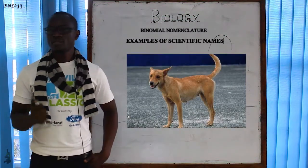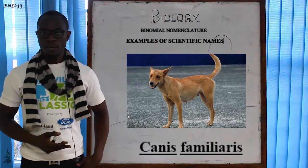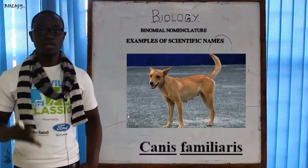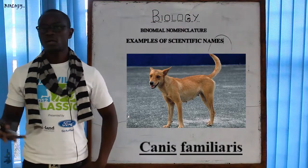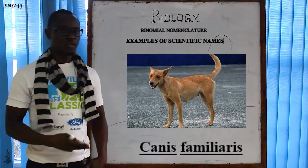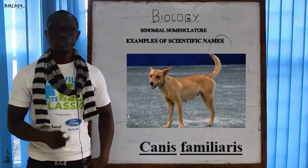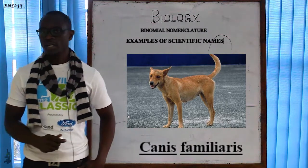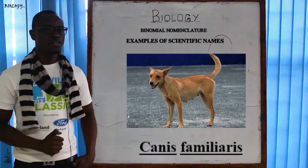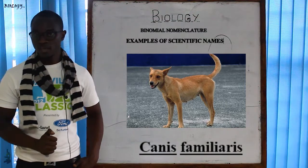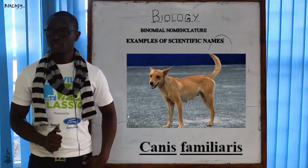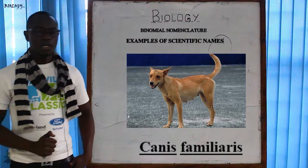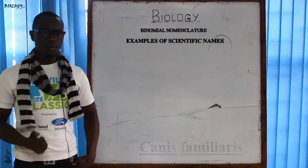Let's look at the dog. In English we call it a dog, but what is the scientific name? The scientific name of a dog is Canis familiaris — Canis is the genus name while familiaris is the specific name.